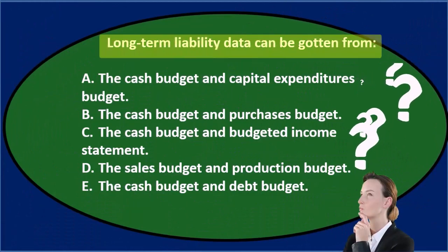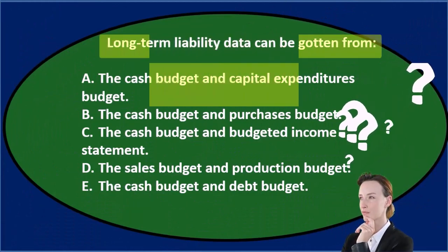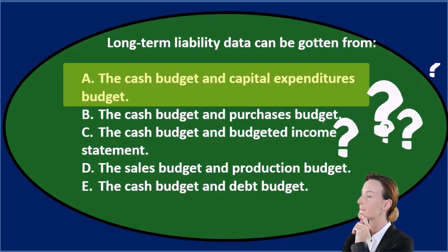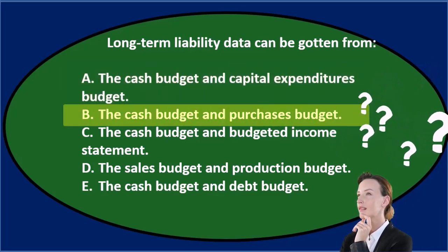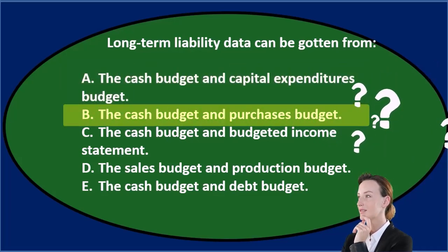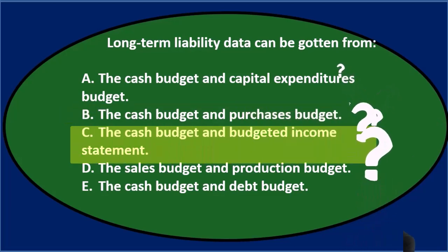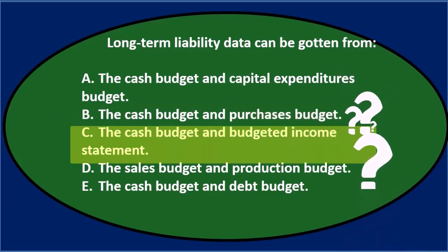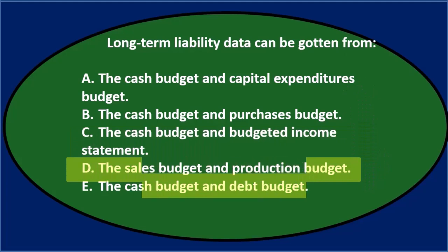Long-term liability data can be gotten from: A) the cash budget and capital expenditures budget, B) the cash budget and purchases budget, C) the cash budget and budgeted income statement, D) the sales budget and production budget, or E) the cash budget and debt budget.